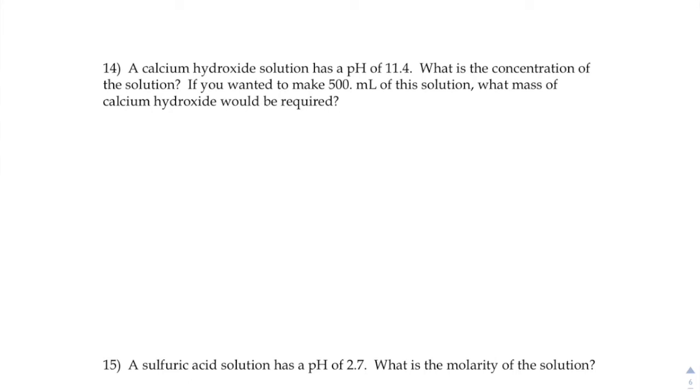So, you want to make up a calcium hydroxide solution that has a pH of 11.4. It wants to know what the concentration of the solution is. And if you wanted to make a 500 milliliter solution, what mass of calcium hydroxide would you have to put in to make that happen?